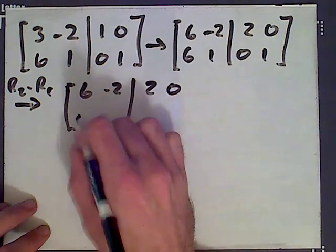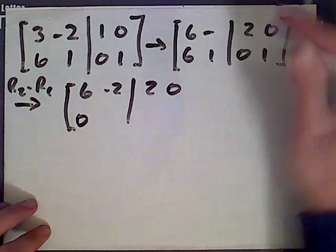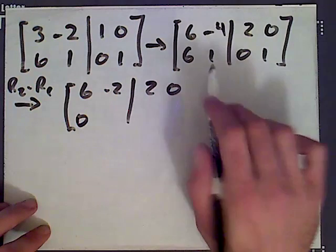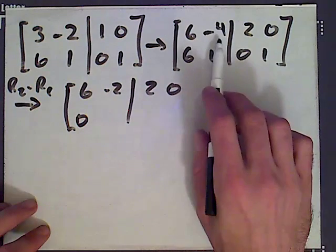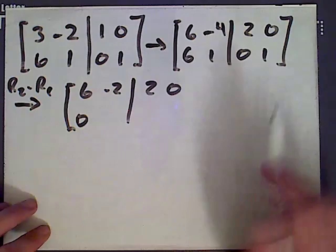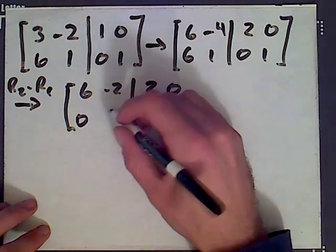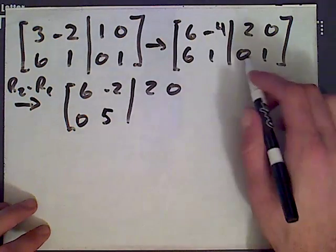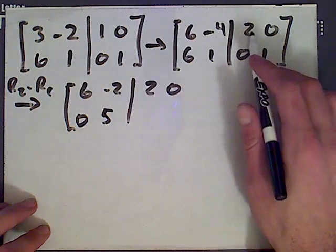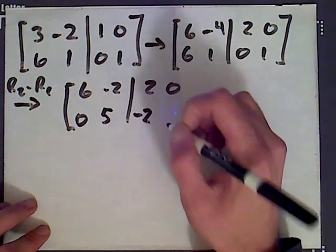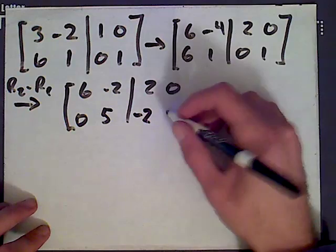We get 0. I'm sorry, this is a negative 4 up here. Make that change if you've been writing this down. That was a negative 4. We multiply the top row by 2. So 1 minus negative 4 is 5. 0 minus 2 is negative 2. And 1 minus 0 is 1.